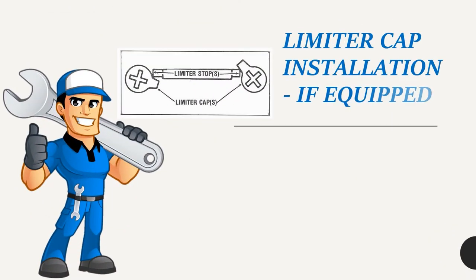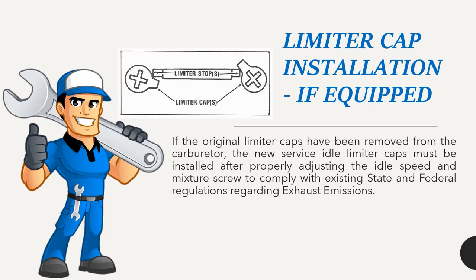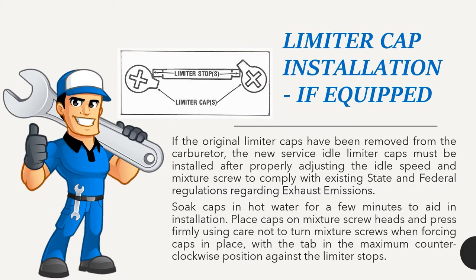Limiter cap installation (if equipped): If the original limiter caps have been removed, the new service idle limiter caps must be installed after properly adjusting idle speed and mixture to comply with existing state and federal regulations regarding exhaust emissions. Soak caps in hot water for a few minutes to aid in installation. Place caps on mixture screw heads and press firmly, with the tab in the maximum counter-clockwise position against the limiter stops.